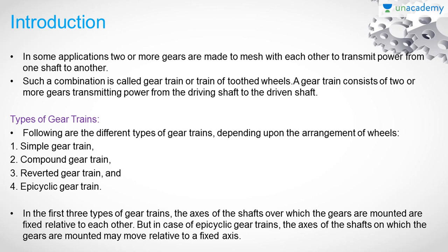For the first three gear train types, the shaft axes are fixed relative to each other, meaning the shaft's axis position does not change with respect to the other shafts in the gear train. For the case of epicyclic gear trains, the axis of the shafts on which the gears are mounted may move relative to a fixed axis. The mechanism is different, where the shaft's axis can be moved relative to a fixed axis. In later chapters, we will discuss epicyclic gear trains. In this lecture, we are going to discuss the first type: the simple gear train.